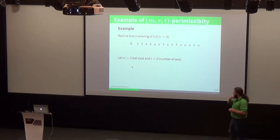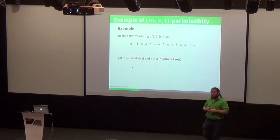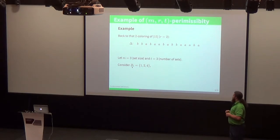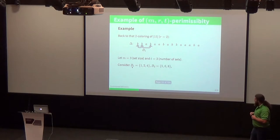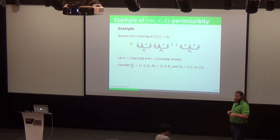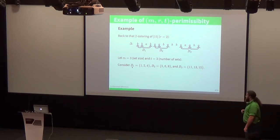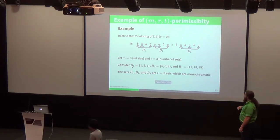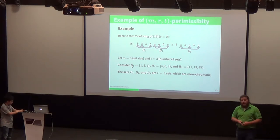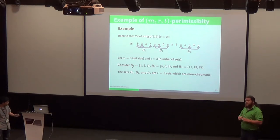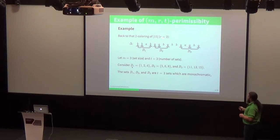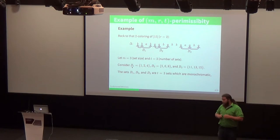So we have an example of this. This is that same coloring from the first few slides. This is a two-coloring, so our r is 2. Let's say our m is 3, and we'll pick three sets so t is 3. If we consider the set B1 as 1, 2, and 4 with those arrows there, B2 as 5, 6, and 8, and B3 as 11, 13, and 15, we can see that each of these sets when taken collectively are all monochromatic. Now I will say that B1 uses the color B, and B2 and B3 both use the color A, which is completely fine as long as individually they're monochromatic in themselves.